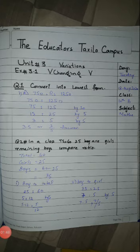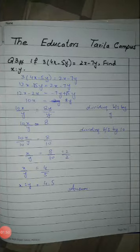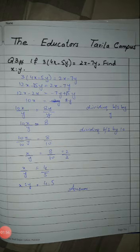Question number 3: if 3(4x − 5) = 5(2x − 7), find the ratio x:y. First, solve the parentheses by multiplying. Then move the x terms to the left side and the constant terms to the right side, and solve to get x equal to 8.